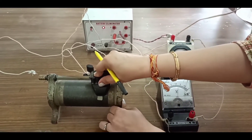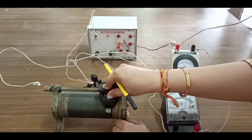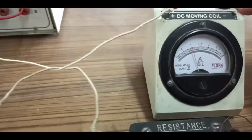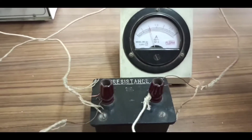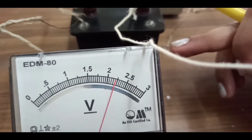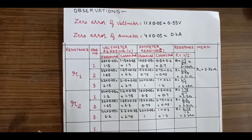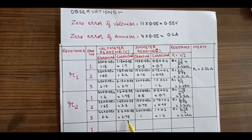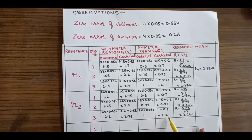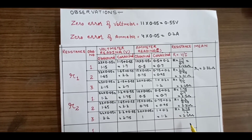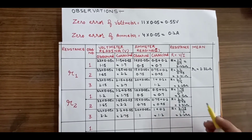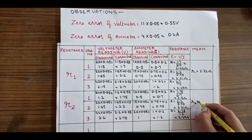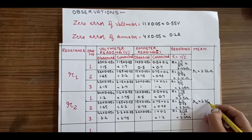Let's take the third value by adjusting the position of the rheostat so that the number of divisions in the ammeter is 20 and the corresponding divisions in the voltmeter is 44. The calculation for the third observation gives a voltage of 2.75 volt, a current of 1.2 ampere, and a resistance of 2.29 ohms. Finding the mean of these three values gives R2 equal to 2.36 ohms.